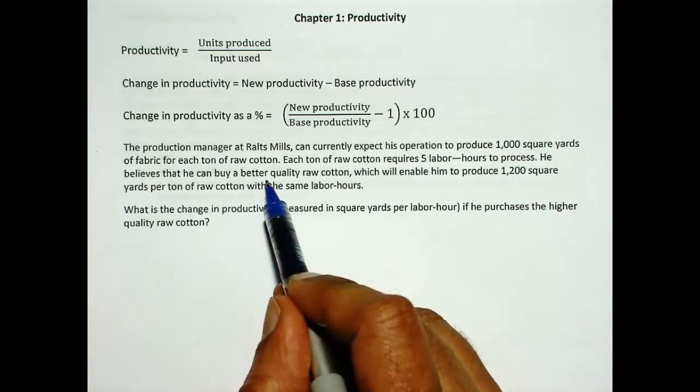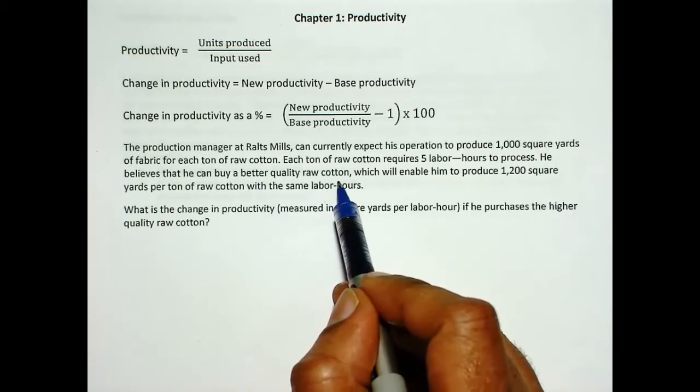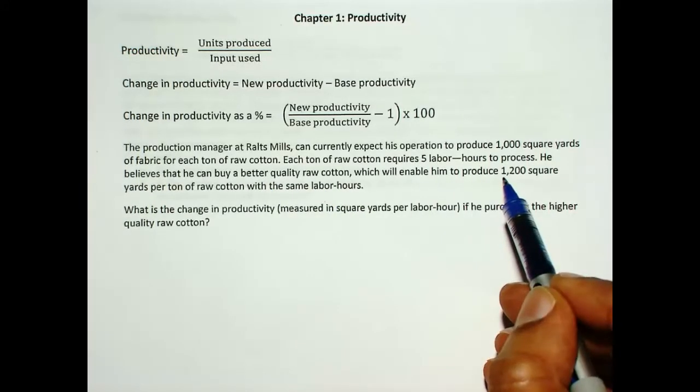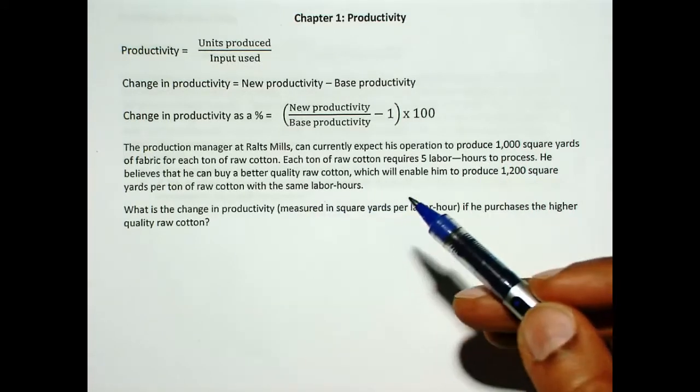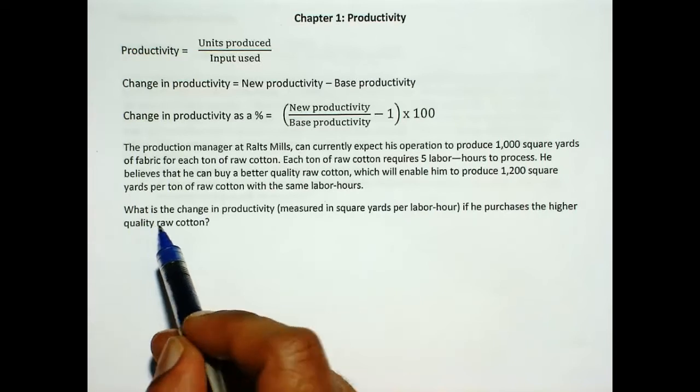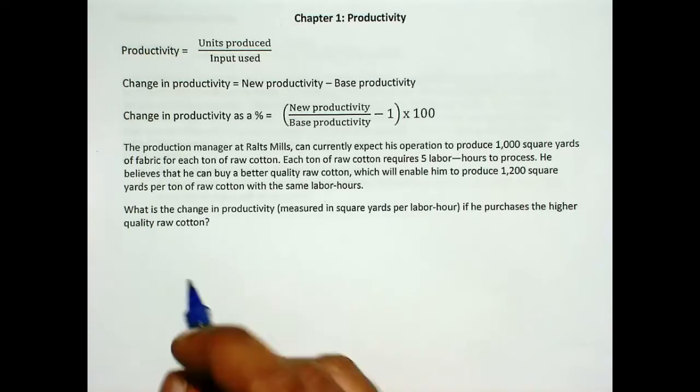Now, the manager is considering buying better quality raw cotton, in which case the production will go up to 1200 square yards for the same labor hours. The question is, what is the change in productivity?